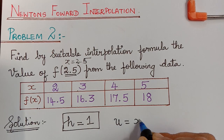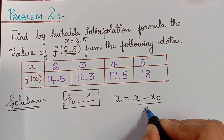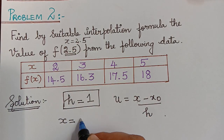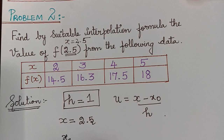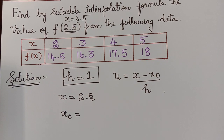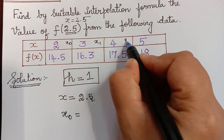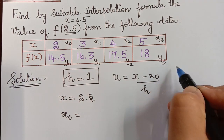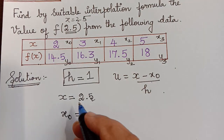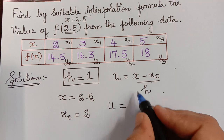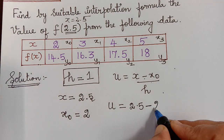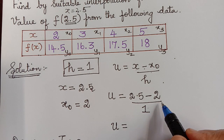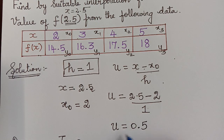The value of u is equal to x minus x0 divided by h. Here, x is the value to be interpolated, which is 2.5. The value of x0 is the first value of the table, which is 2. So the x values are x0, x1, x2, x3, and the corresponding y values are y0, y1, y2, y3. Therefore, u equals 2.5 minus 2 divided by 1, which gives us 0.5. So u is equal to 0.5.